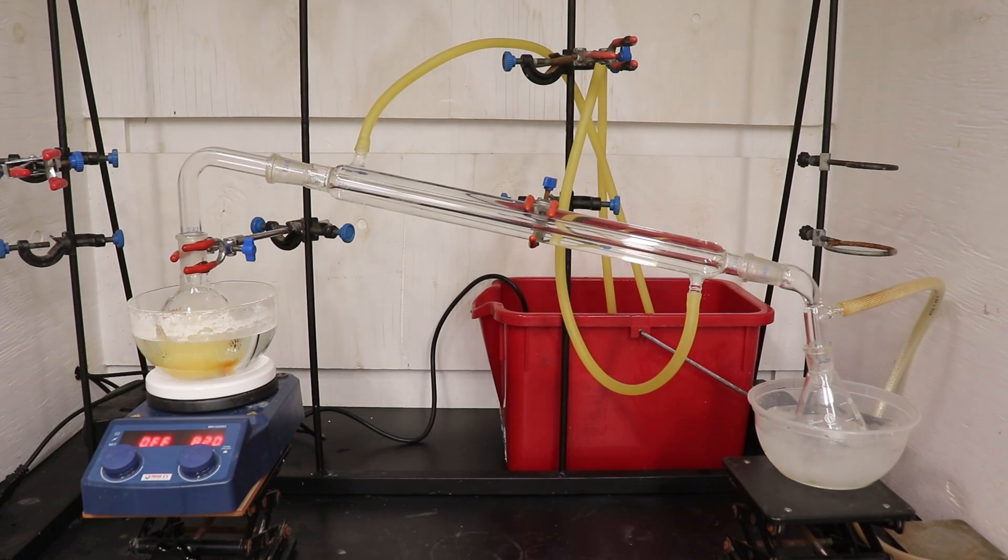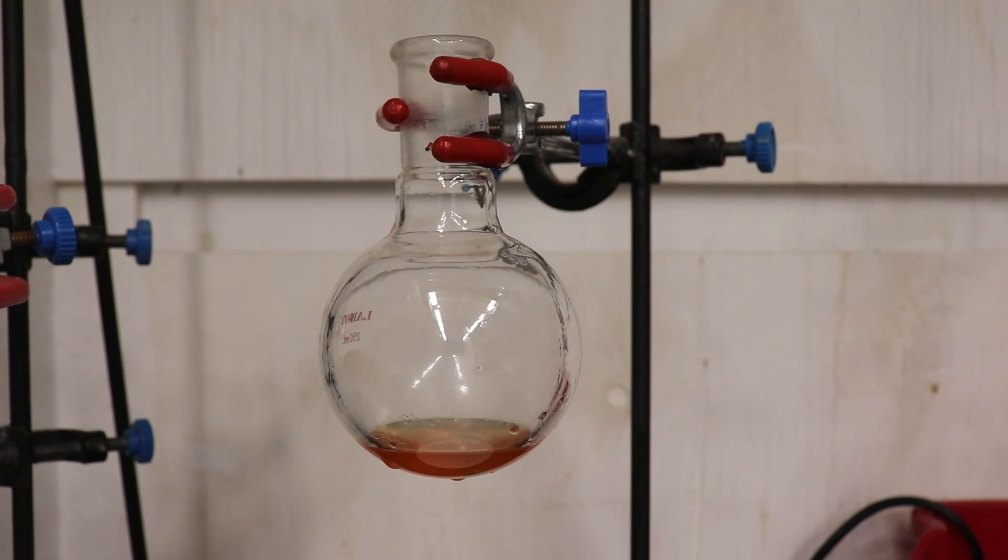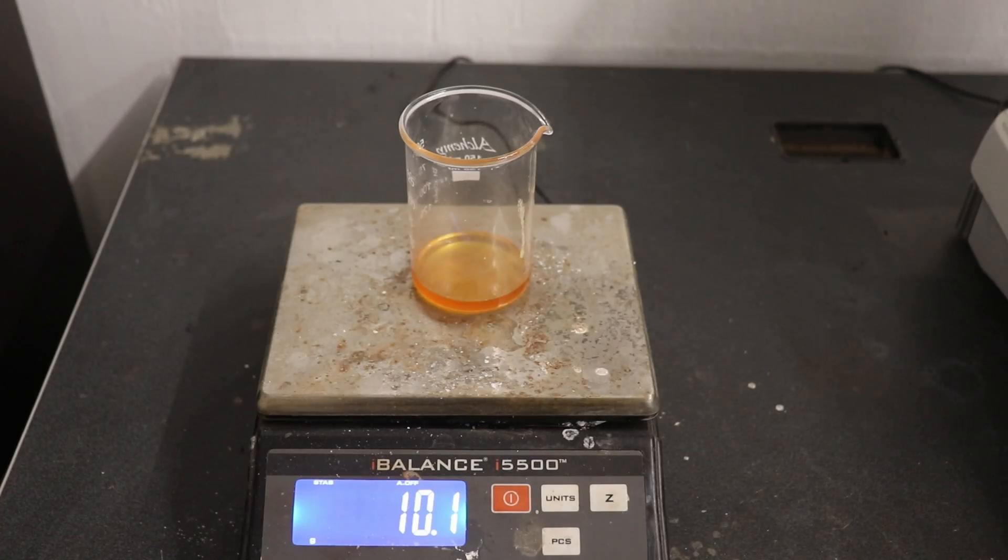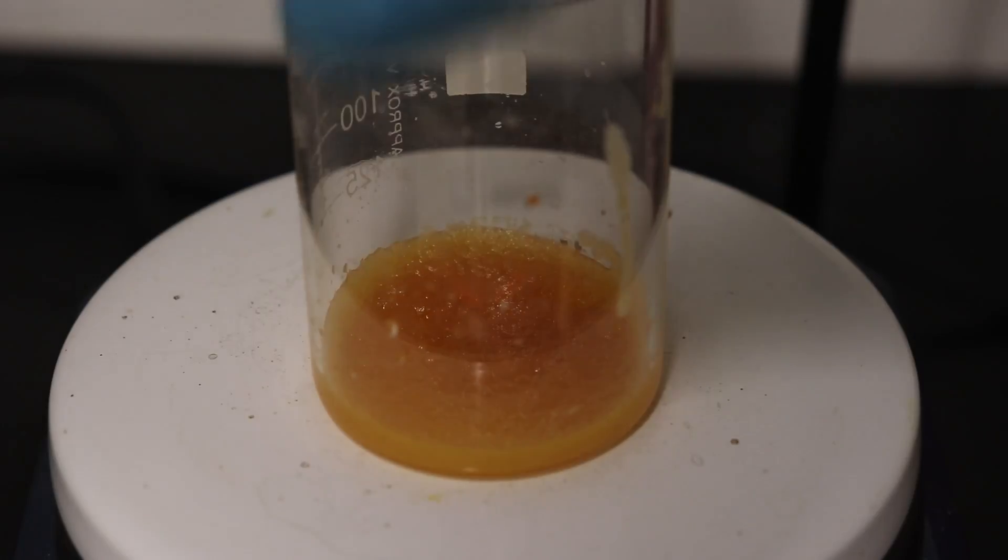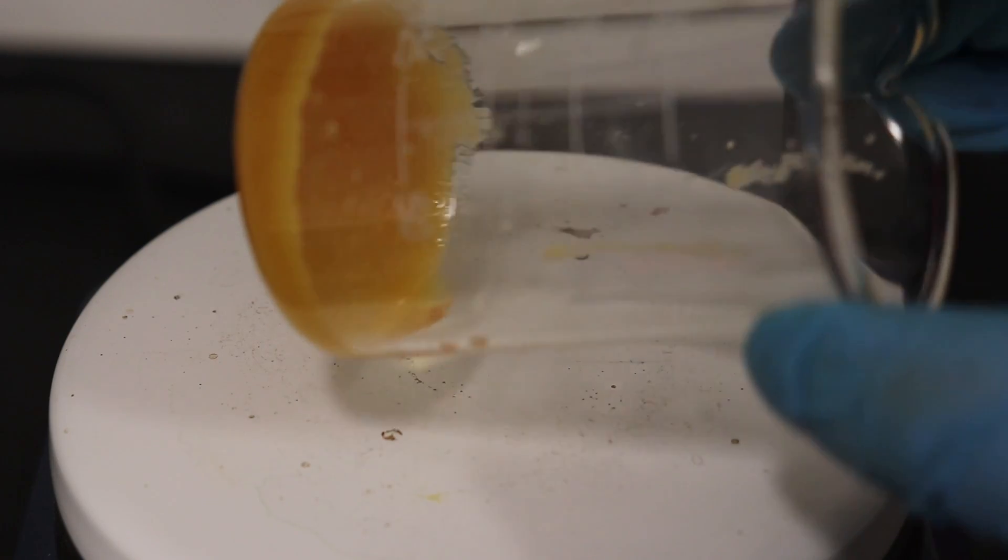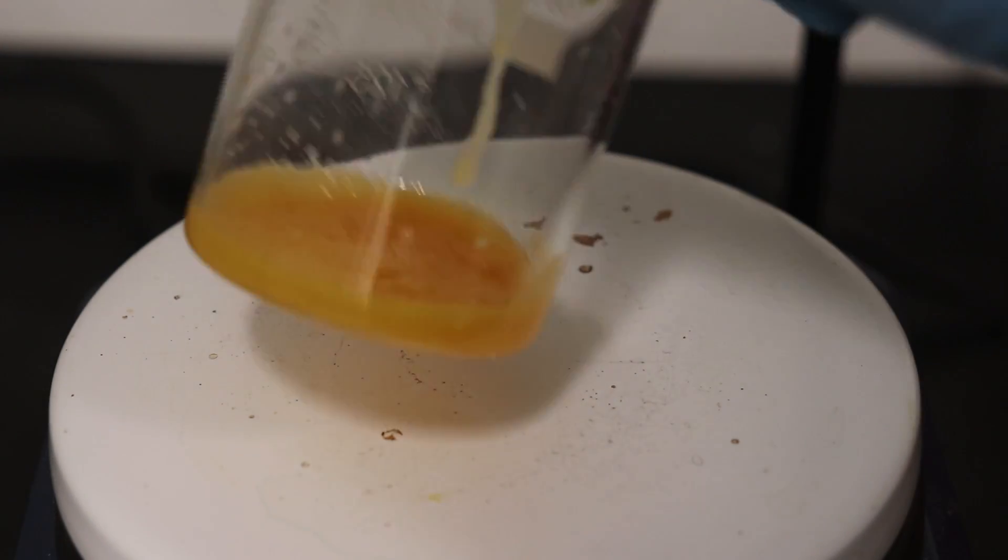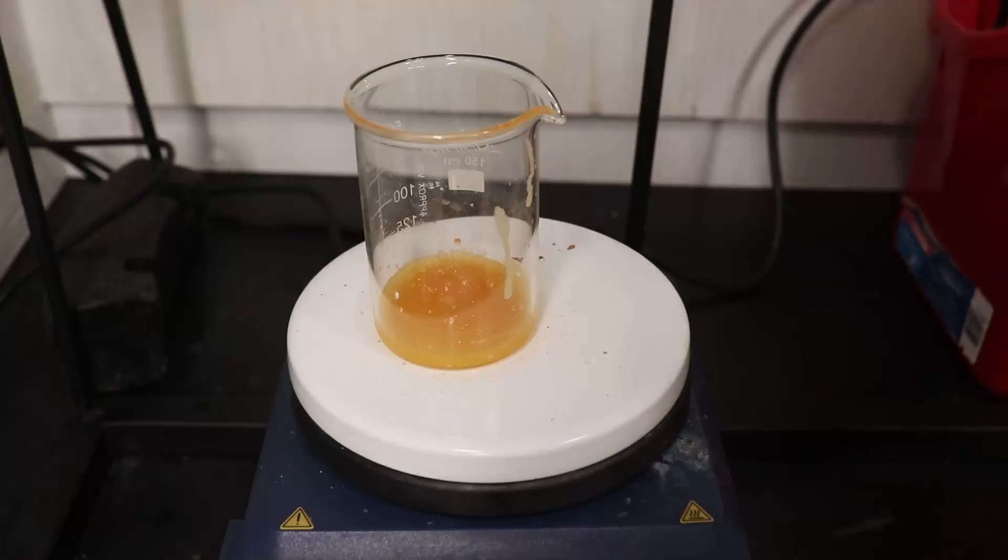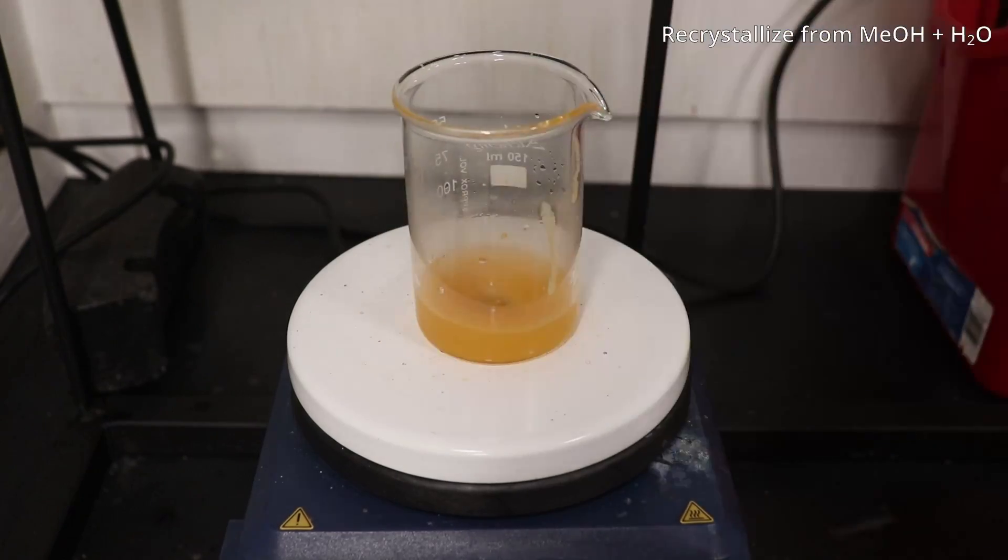After the rate of distillation slowed, the residual ether was stripped off under vacuum. This left us with 10.1 grams of very crude biphenyl representing a 70 percent yield. The paper reported a 90 percent crude yield and I have some ideas on why our yield might be lower, which I'll talk about later on.